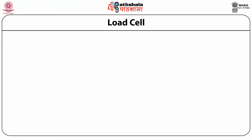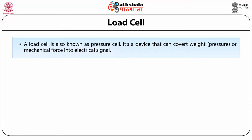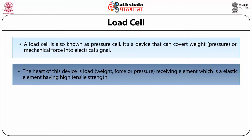Load cell. A load cell is also known as a pressure cell. It is a device that can convert weight, i.e. pressure or mechanical force, into electrical signal. It is widely used for measuring dynamic and static forces. The heart of this device is a load, i.e. weight, force or pressure receiving element, which is an elastic element having a high tensile strength. This element is bonded to a strain gauge bridge network.